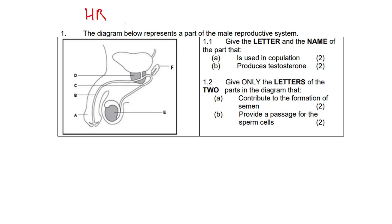This is human reproduction, worth 37 to 43 marks in your paper one - a relatively big section. The diagram below represents a part of the male reproductive system. Give the letter and the name of the part that is used in copulation. That is the penis.